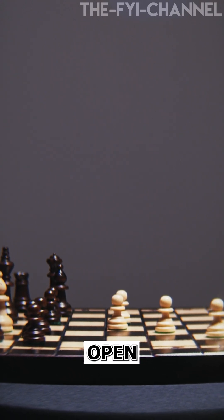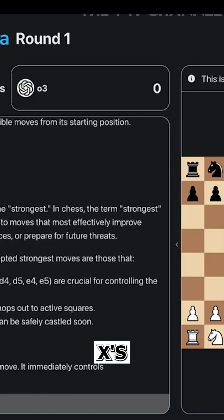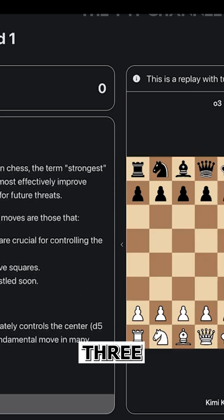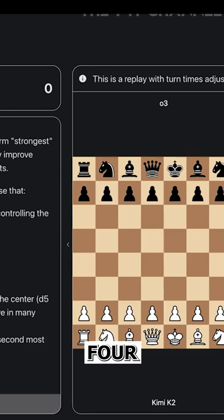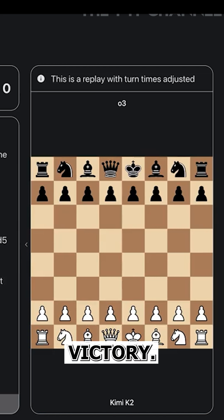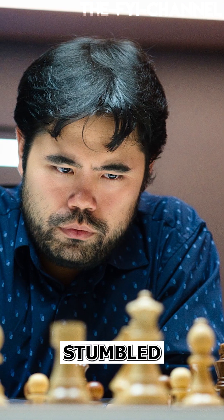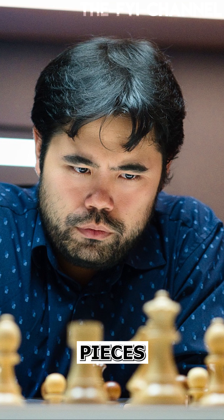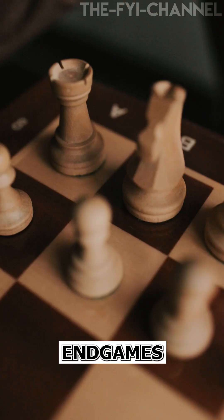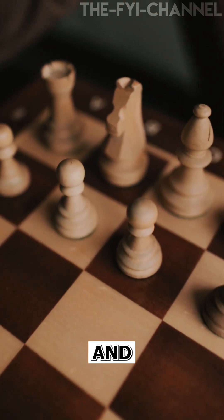Then came the final: OpenAI's 03 versus XAI's Grok 4. And wow, 03 didn't just win, it crushed Grok 4 with a flawless 4-0 victory. Commentators, including Hikaru Nakamura, noted how Grok stumbled with major blunders, dropping pieces early and faltering in critical endgames, while 03 maintained precision and composure throughout.